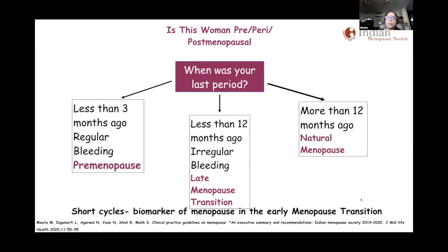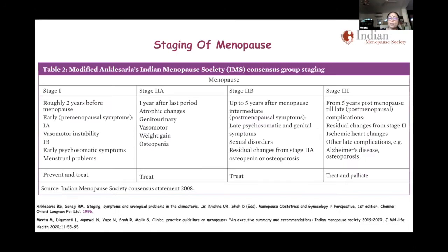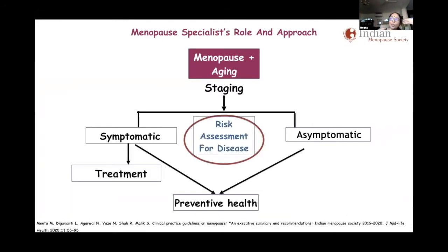When you see a woman at menopause, you immediately think about which stage she's in — pre-menopausal, perimenopausal, or post-menopausal. We should be promoting the modified Ankele Sharyas Indian Menopause Society staging, because it gives a clue as to which phase of life this woman is in. Planning treatment is very important, as these are long-term issues — you're going to see this woman every year, or more often if there is a problem.